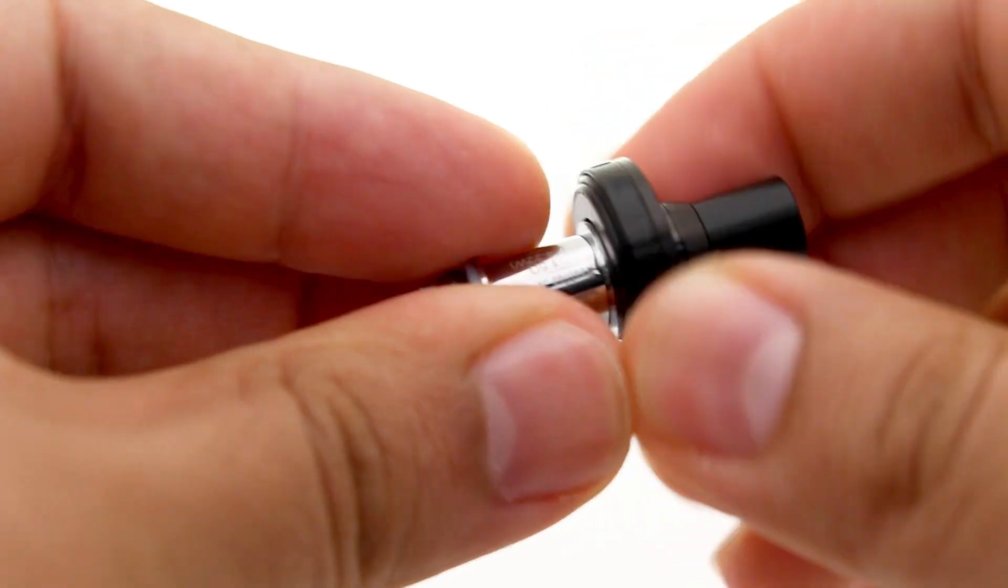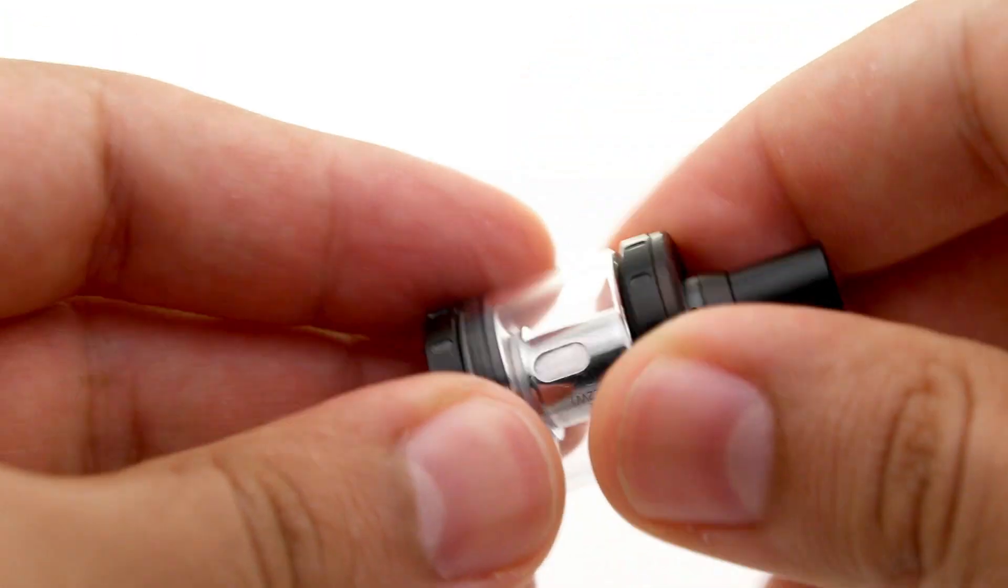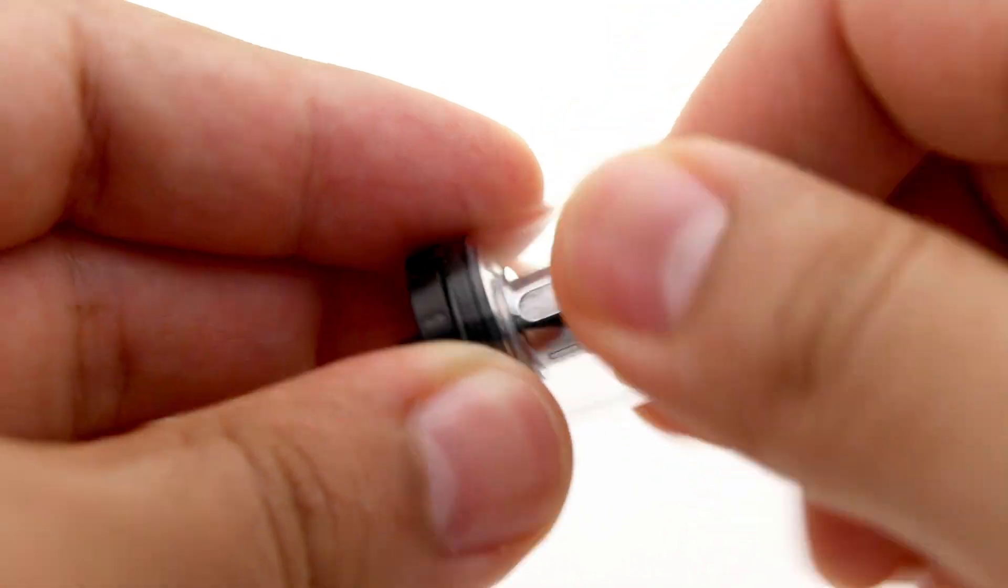The design of the Nautilus X is very simple. Just screw the coil into the top piece, and then into the deck, and it's all set, making this tank very beginner friendly.